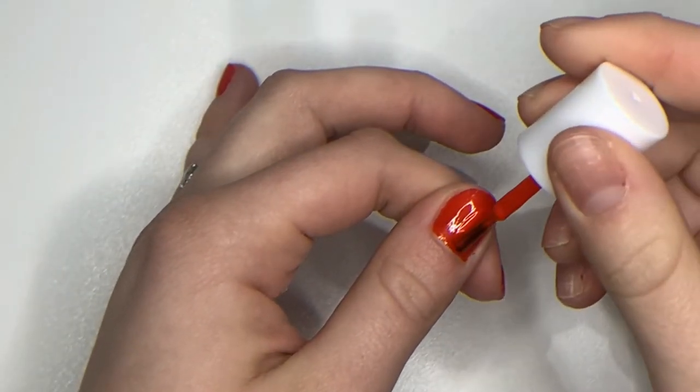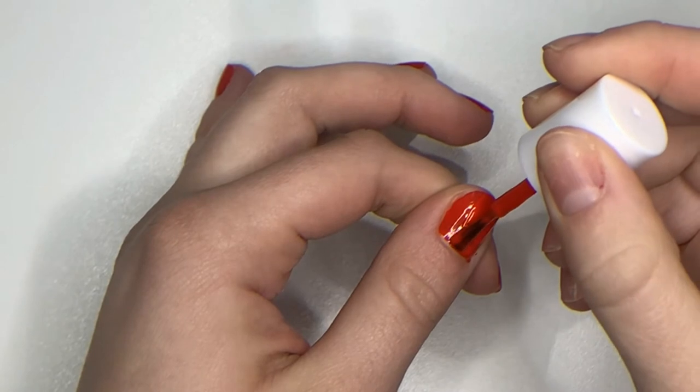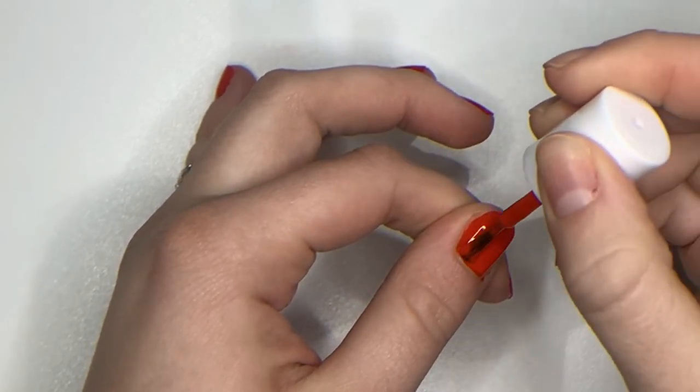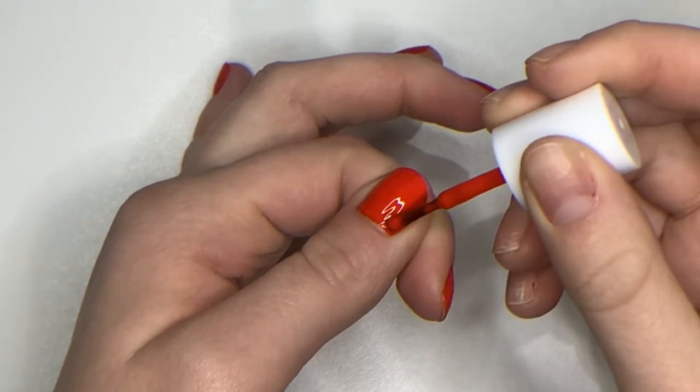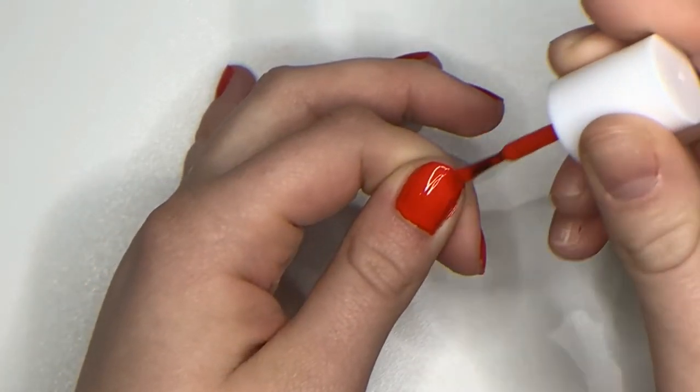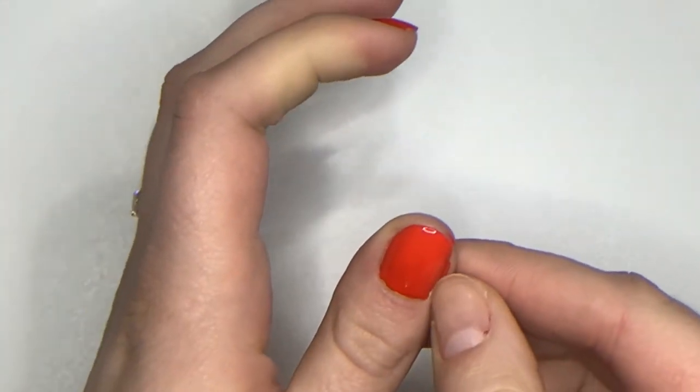After I have completed my first base of color I would normally go on to painting my other hand. So I have just let this hand dry a little bit for a few minutes before going in with my second coat of color.